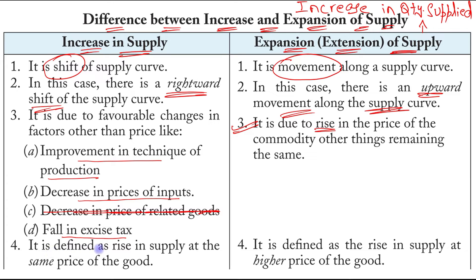Increase in supply is defined as a rise in supply at the same price of the good, resulting in a rightward shift of the supply curve. This increase in supply is due to favorable changes in other factors, with price remaining constant. Expansion of supply is defined as a rise in supply at a higher price of the good.